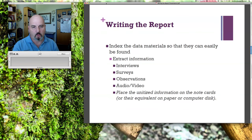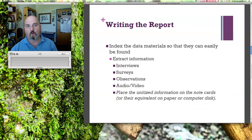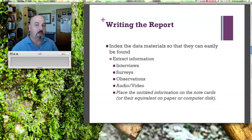When writing the report, you want to index the data materials so they can easily be found — that's where the data cards come in. As you go through the data you've collected, you'll develop different kinds of categories and can arrange them. You may have six, nine, or four categories — it just depends on what's relevant. This is where the themes really come in handy, because the emergent themes are going to be the larger issues you'll be relating in your case study. You can extract surveys, interviews, and observations — all of what you have can be found on those data cards, those index cards.